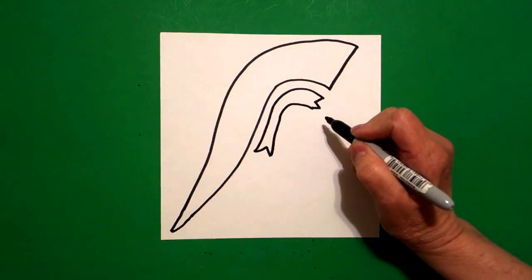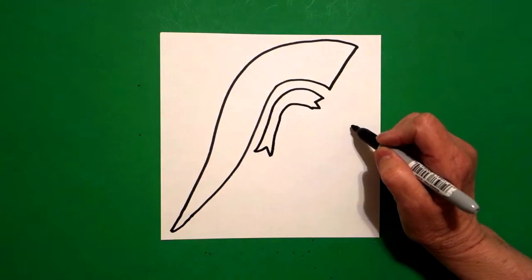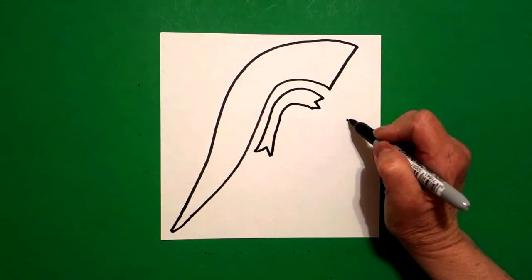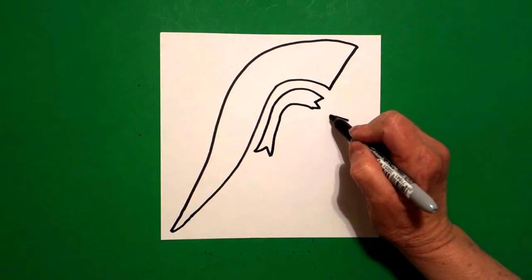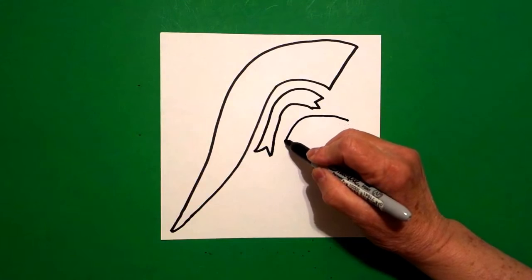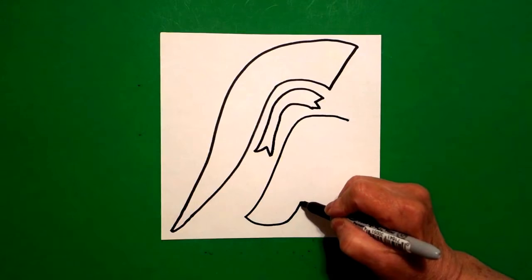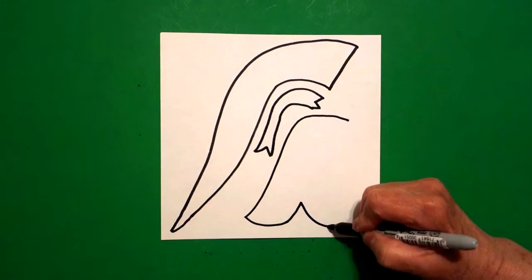Now I'm going to mimic that shape and line again. Let's start right here and put a dot. And from that dot I come in with a curved line, bring it down, curve line in, straight line, curve line.